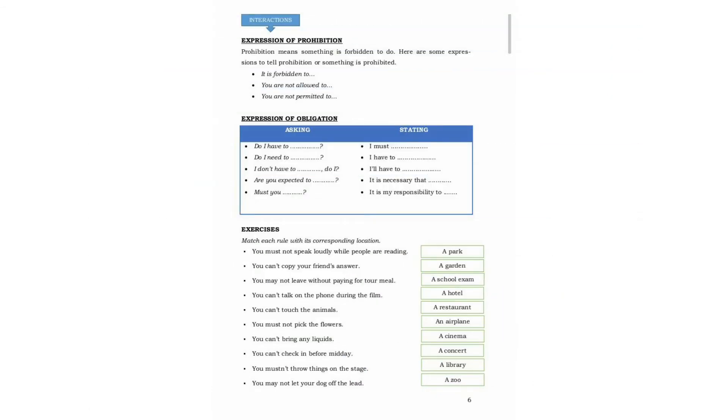So how can you express prohibition? Prohibition means something is forbidden to do. Here are some expressions for prohibition: something is prohibited, it is forbidden to, you are not allowed to, you are not permitted to. Next, expressions of obligation.